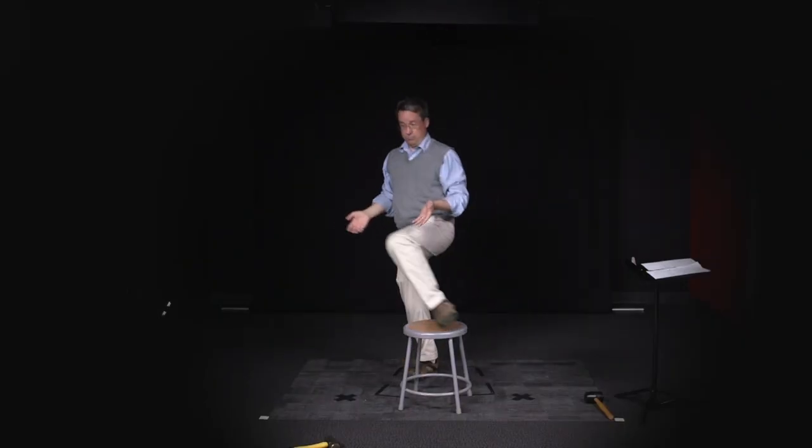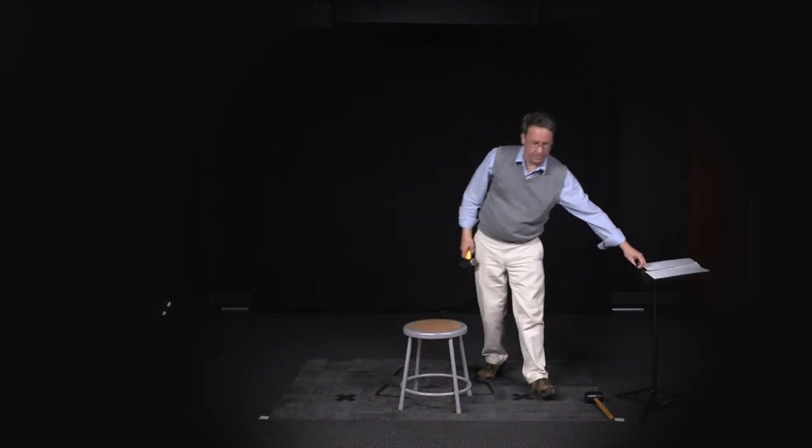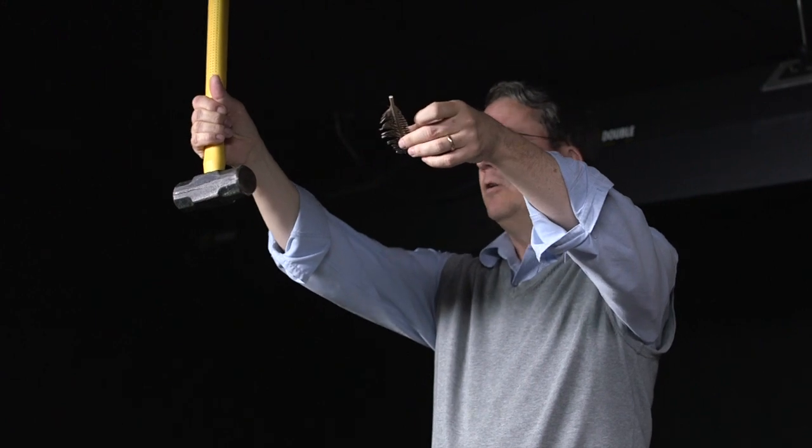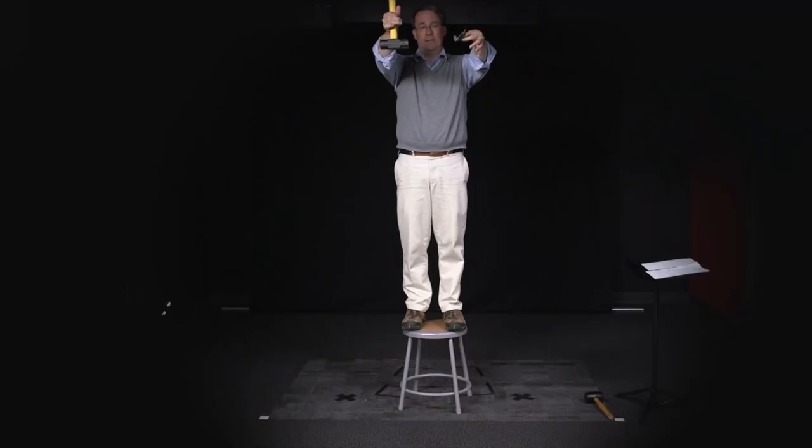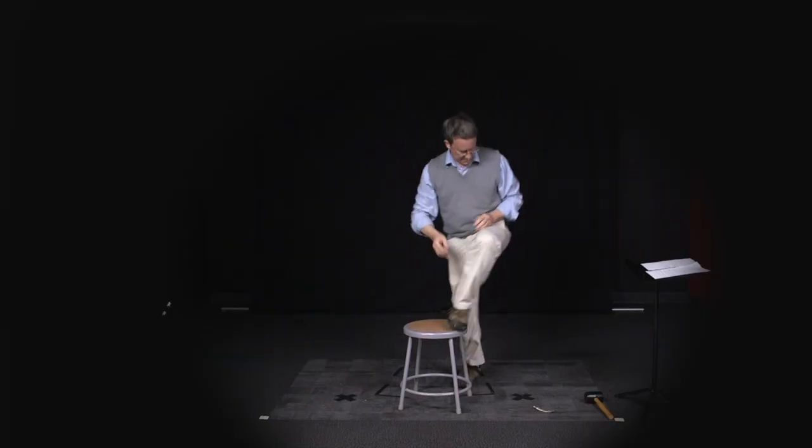What if we go even lighter? Well, let's go to a ratio of 4,000 to one. This turkey feather weighs half a gram, four thousand times less than the hammer. What's going to happen when I drop them together? Behave differently. Why? Because the feather is so light that air resistance played an important role.